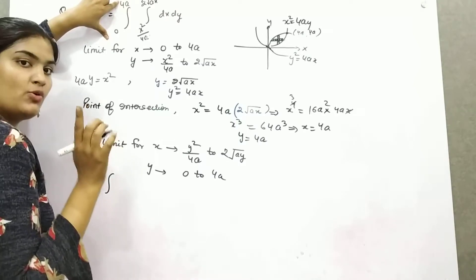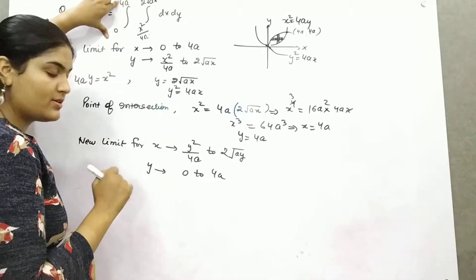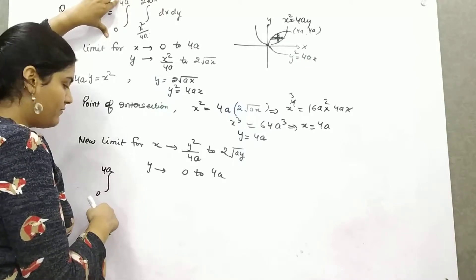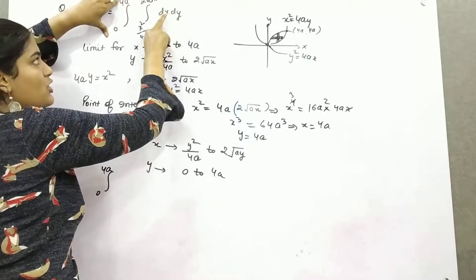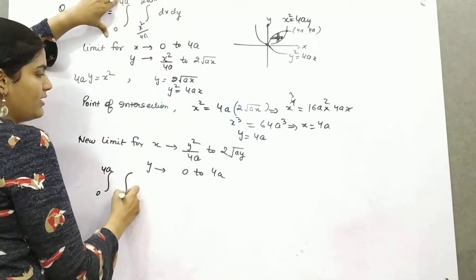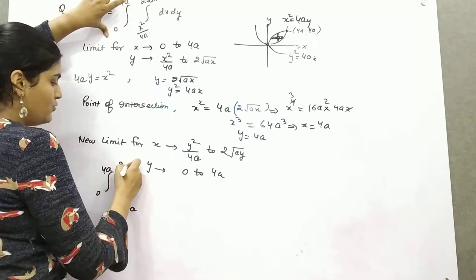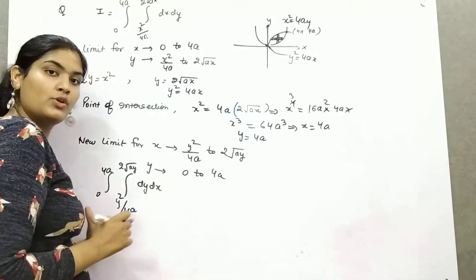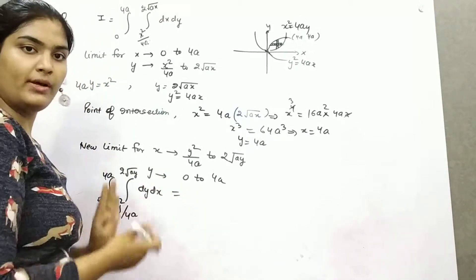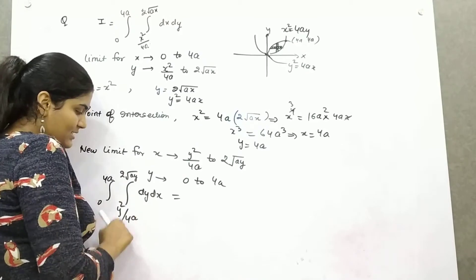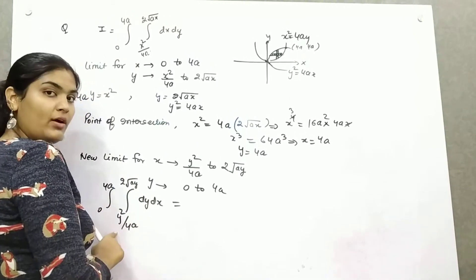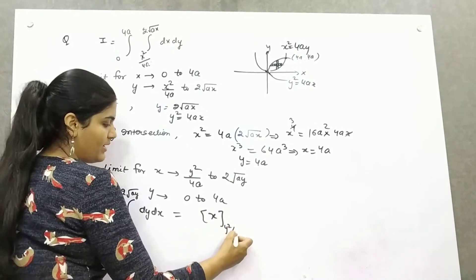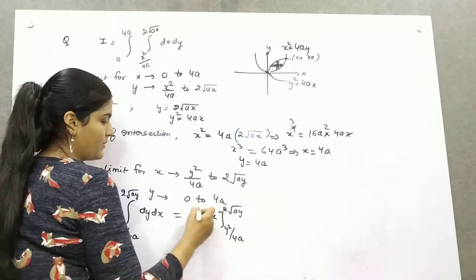Now substitute the new limits into the integral. The outer integral runs from 0 to 4a in y, and the inner integral for x runs from y²/4a to 2√(ay). The order is now dy dx — that is, we first integrate with respect to x. Solving the inner integration of dx gives x evaluated from y²/4a to 2√(ay).